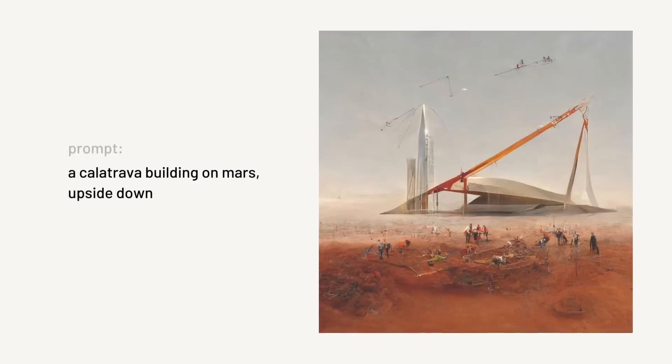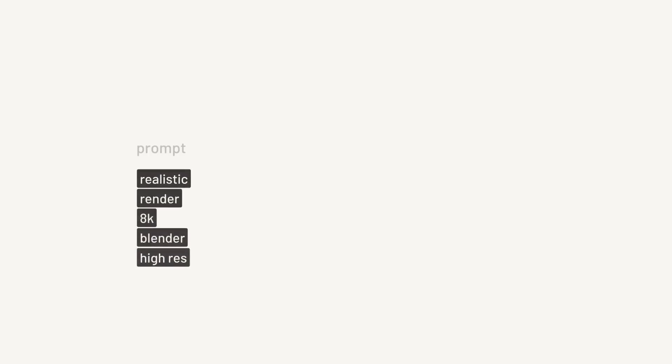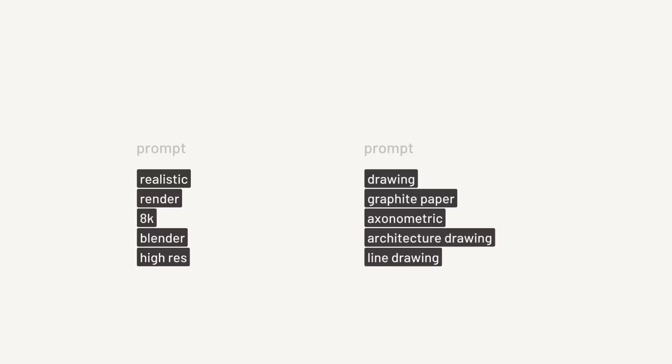Your results can also differ depending on the keywords you add towards the end. Some people have seen that adding keywords like realistic render, 8K, Blender, and high resolution generates different images compared to when they're not there. Similarly, adding words like drawing, graphite, paper, axonometric, and architecture drawing can steer you in a different direction altogether.